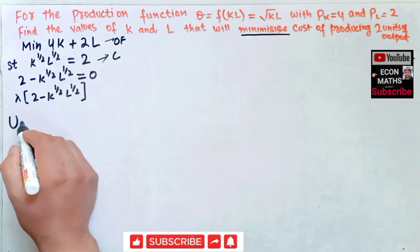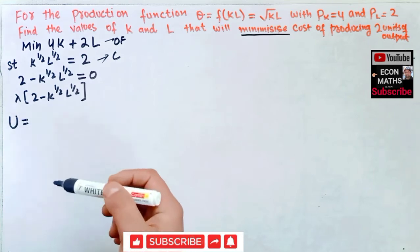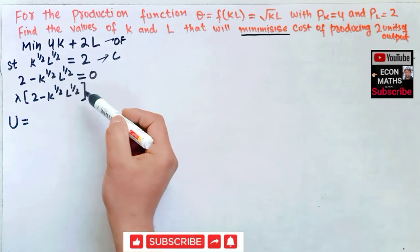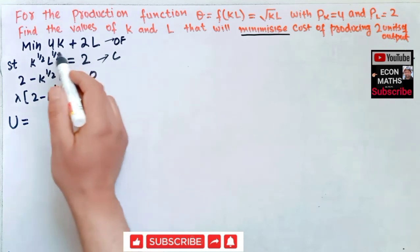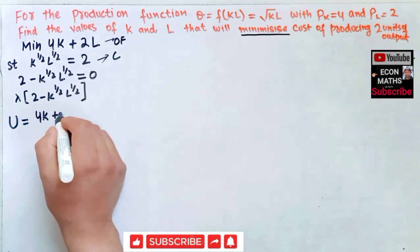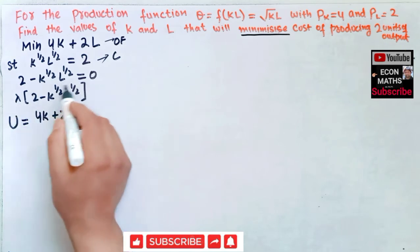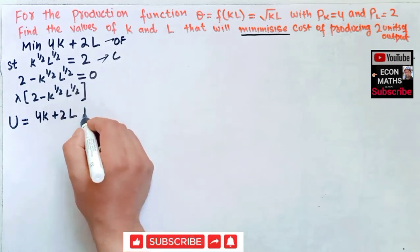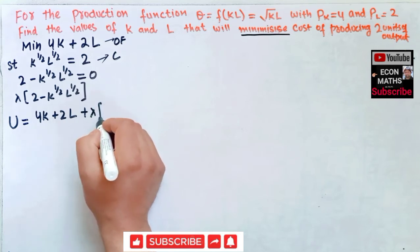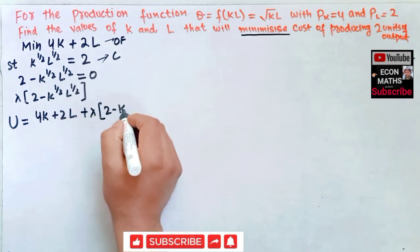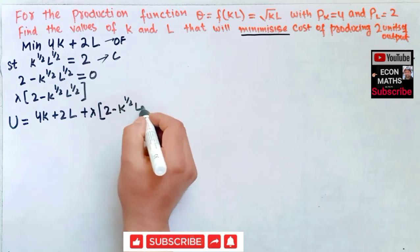We now form the Lagrangian function, which is simply the addition of the objective function and the resulting constraint function. Our Lagrangian is: L = 4K + 2L + λ(2 − K^(1/2) · L^(1/2)). We then partially differentiate this with respect to capital, labor, and lambda.